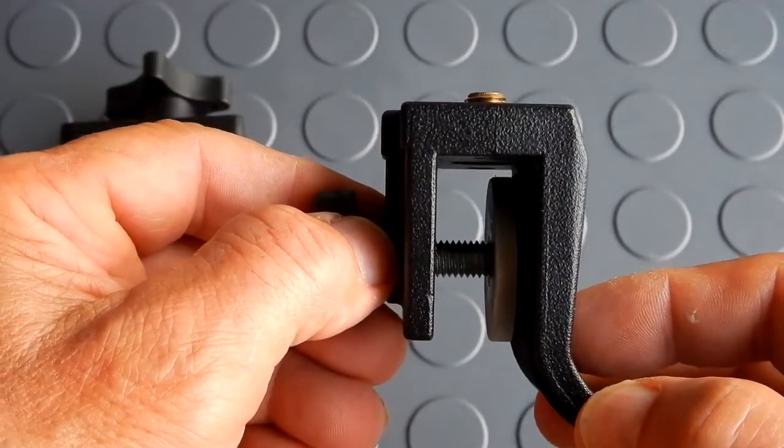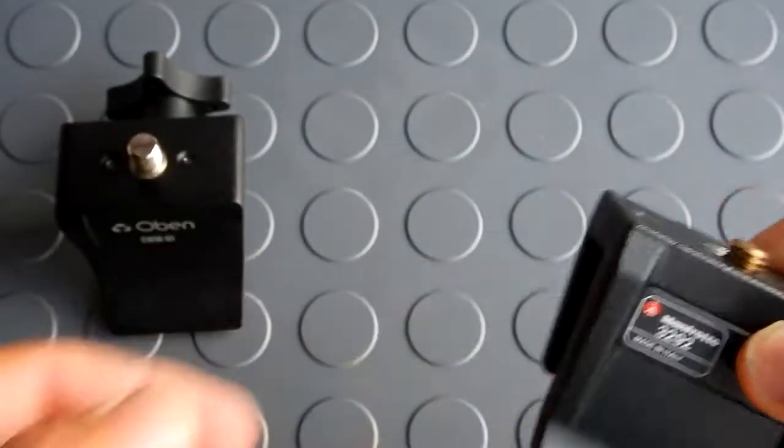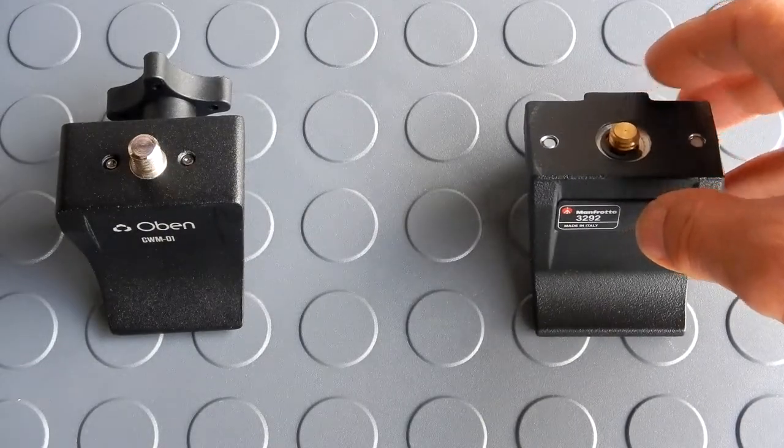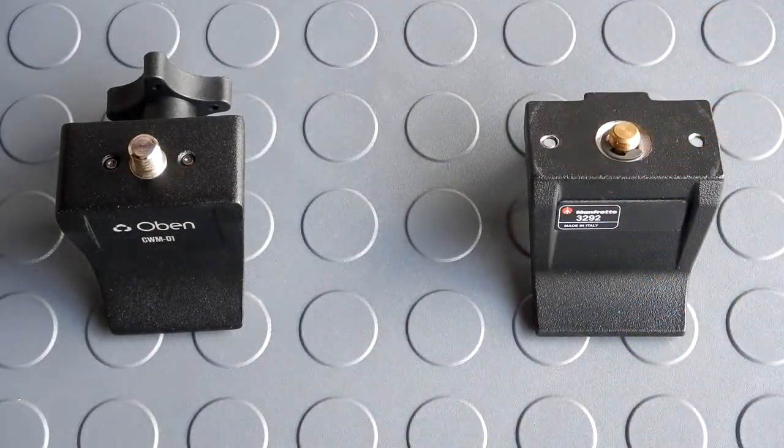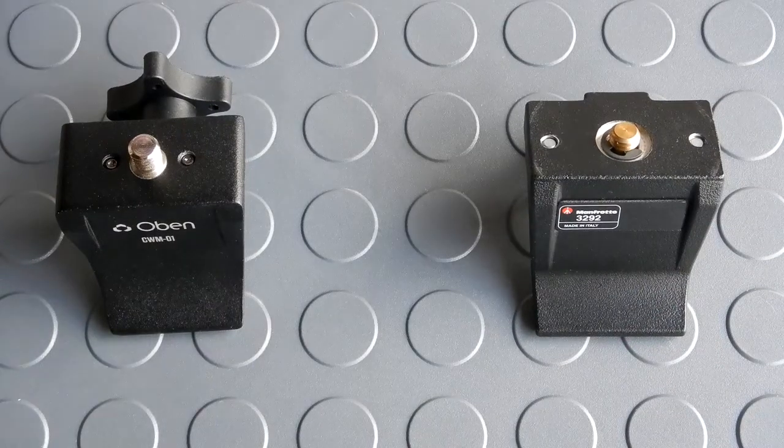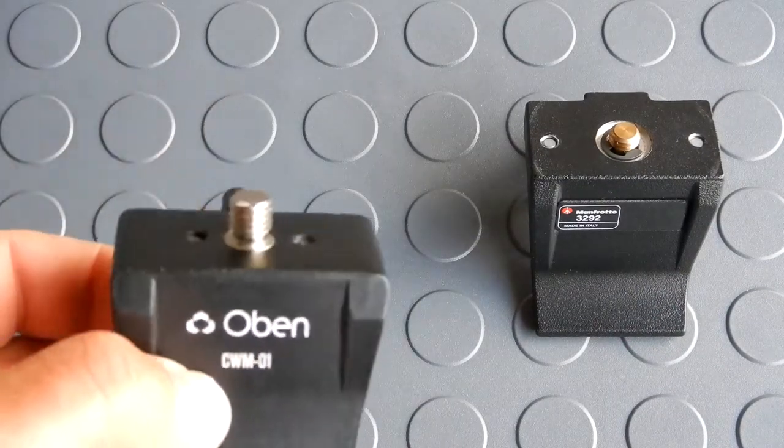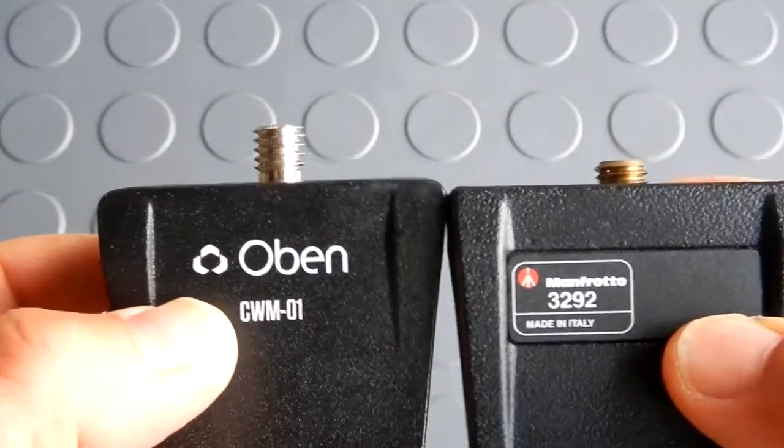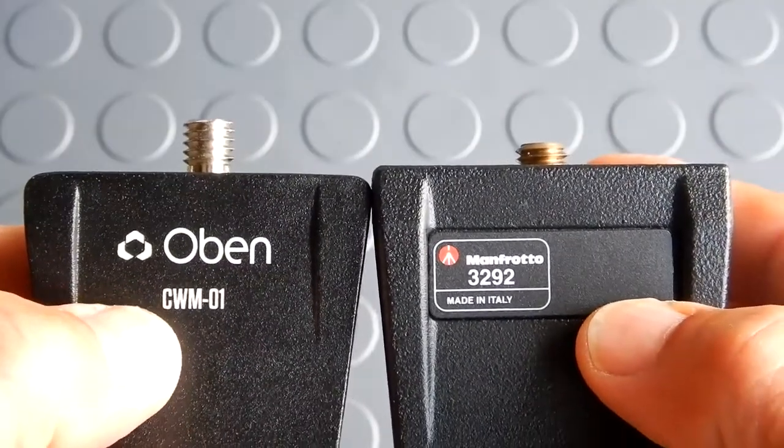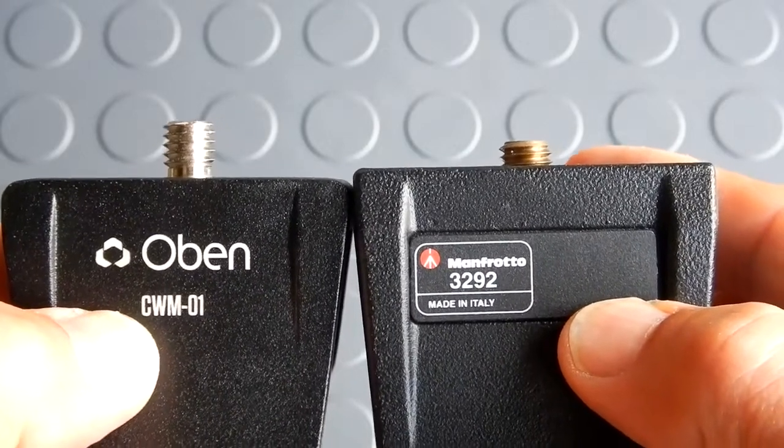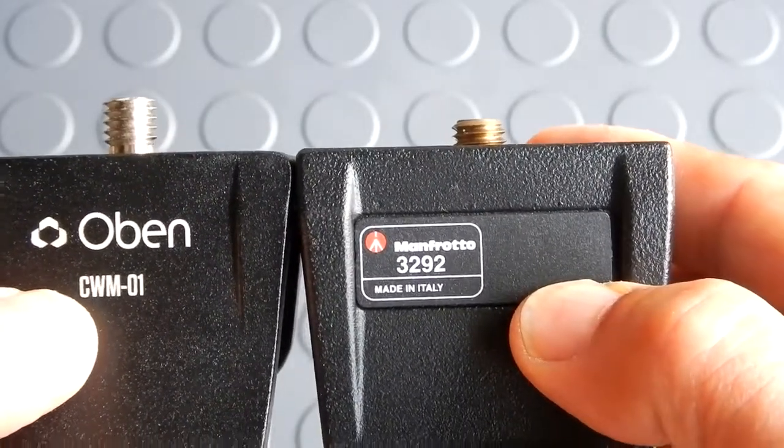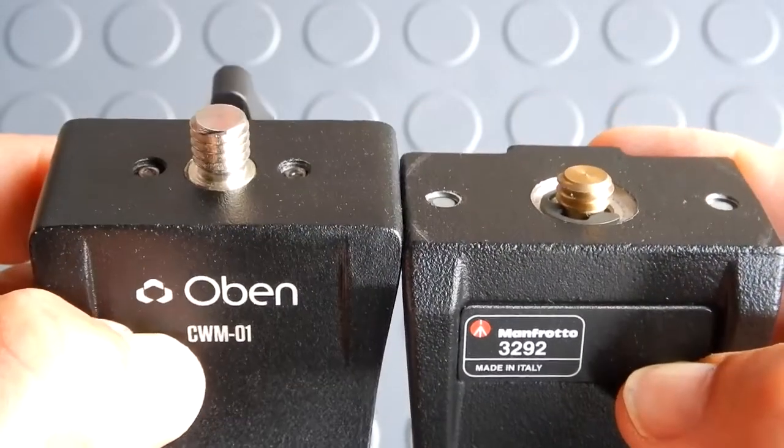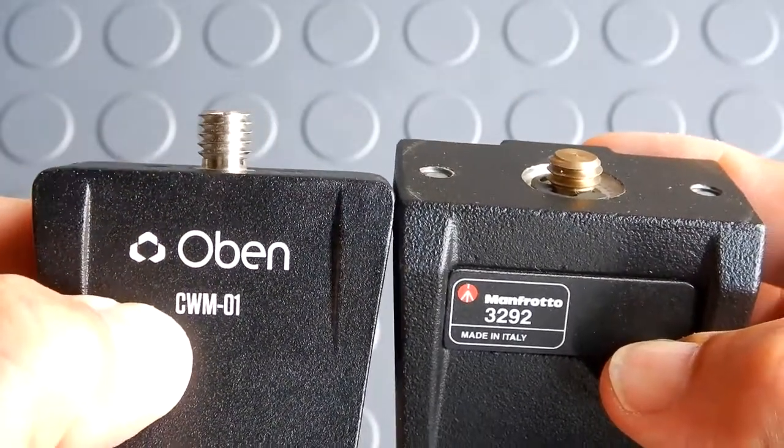This will anchor onto anything - could be a piece of plywood or anything that would be flat. Let's look at the first thing: the 3/8-16 studs. You can see that the Oban has a much longer stud than the Manfrotto. The Manfrotto is brass, the Oban is just a metal - it's not stainless, it's magnetic.